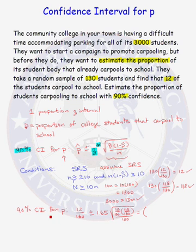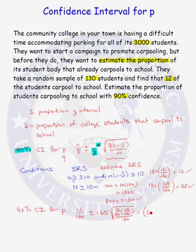For our 90% confidence interval for P, we have P-hat, which is 12 out of 130, plus or minus our Z critical value of 1.65, times the square root of P-hat (12 over 130) times 1 minus P-hat (118 out of 130), all over N of 130. Calculating this, we find that the interval equals 0.050 up to 0.134. We have our 90% confidence interval.